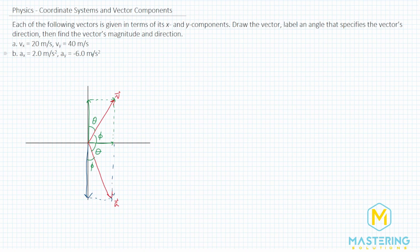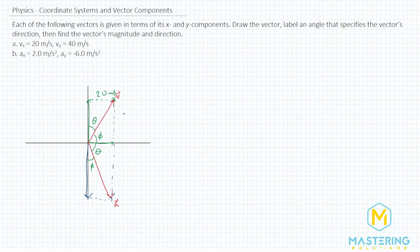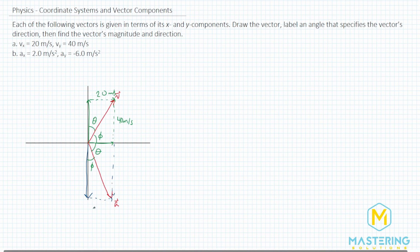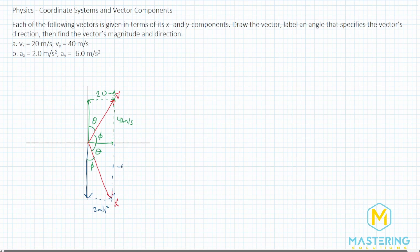Let's label the x and y components so we don't get confused. For part a, vx is 20 meters per second and vy is 40 meters per second. For part b, the x component is 2 meters per second squared and the y component is negative 6 meters per second squared.